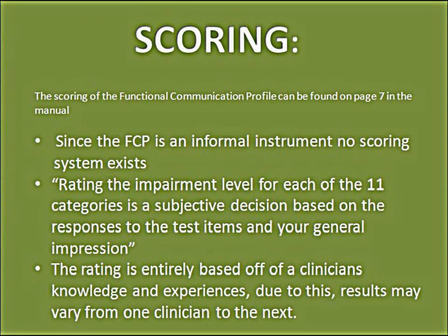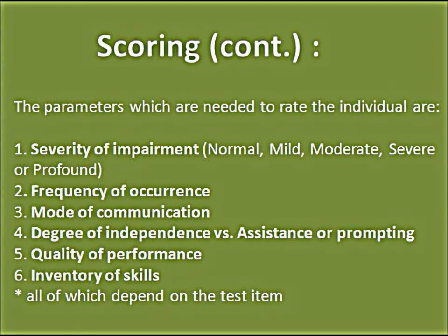Since the Functional Communication Profile is an informal instrument, no scoring system exists. Rating the impairment level for each of the 11 categories is a subjective decision based on responses to the test items and the clinician's general impression. The rating is entirely based on the clinician's knowledge, judgment, and experience, so results may vary from one clinician to the next. The parameters needed to rate the individual are severity of impairment — ranging from normal, mild, moderate, severe, to profound — frequency of occurrence, mode of communication, degree of independence versus assistance or prompting, quality of performance, and inventory skills.